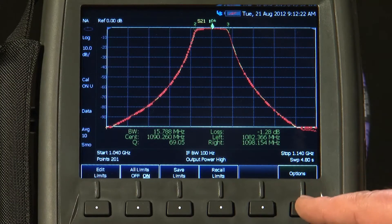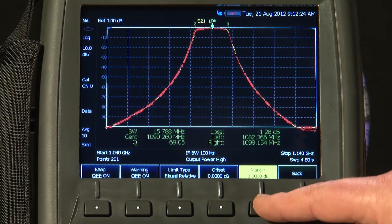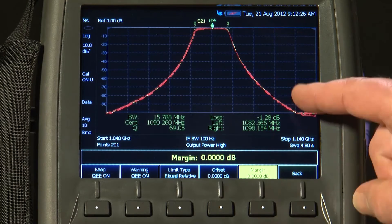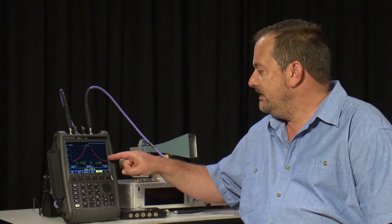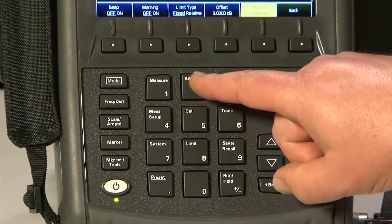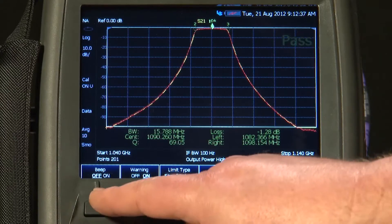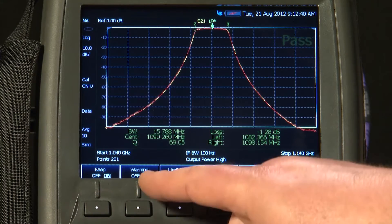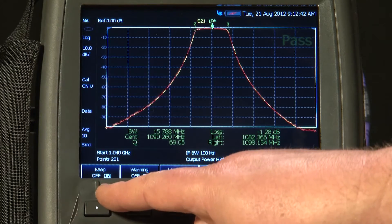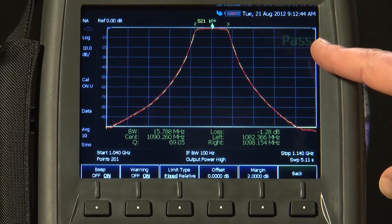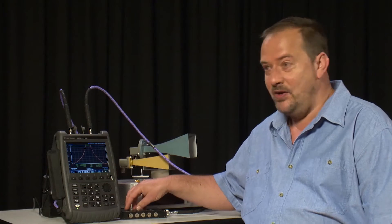And under Options, I can set a margin here. So if we say this filter has to look like that shape, but within 2 dB, and I turn the warning indicator and the beep on, you will see that the filter obviously passes, because this is the golden standard.